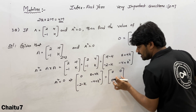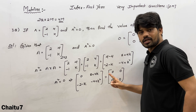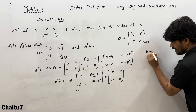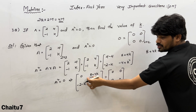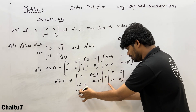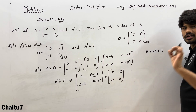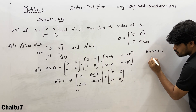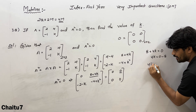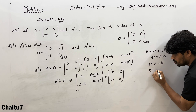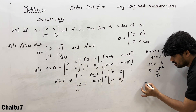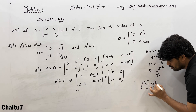Equating elements to zero to find K: from 8 + 4K = 0, we get 4K = −8, so K = −8/4 = −2. Therefore K = −2. This is the answer.